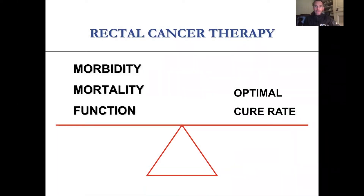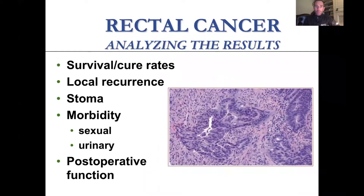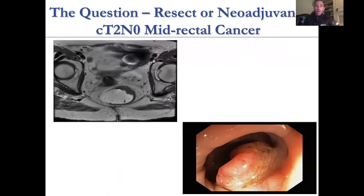In order to think about any rectal cancer, I like to think about this kind of paradigm. On one hand, we want to make sure that we have optimal cure rate, but we're also thinking about morbidity, function, and overall mortality. When you look at the results of rectal cancer, it's really important to consider all of these different metrics and endpoints there on the left-hand side of the screen.